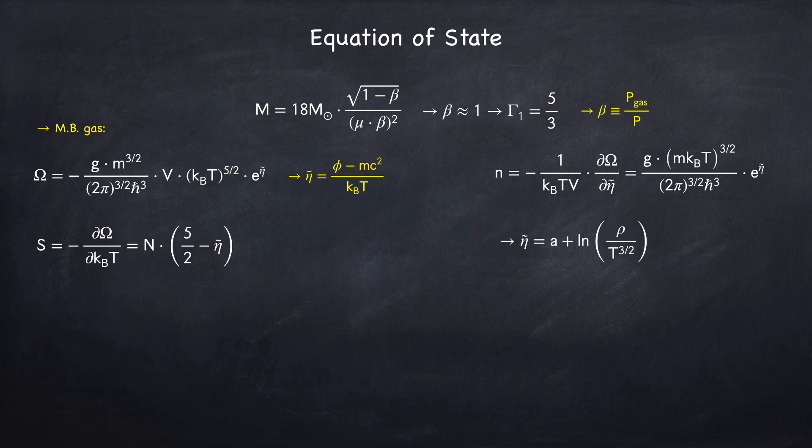Now this is the total entropy for a given volume with capital N number of particles. If I divide by the number of baryons, I will get the entropy per baryon. And here I've replaced eta tilde with the eta tilde we found over here. So the entropy per baryon will be some constant, which I've called S0, plus this log.